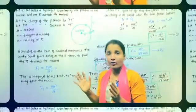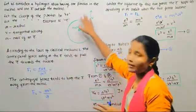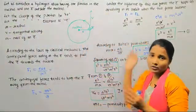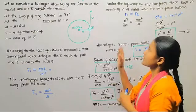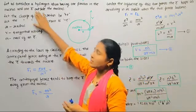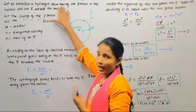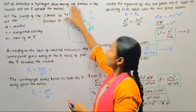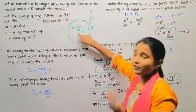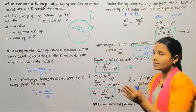Dear students, I am going to derive one equation — that is the derivation of an expression for the radius of orbit present in the hydrogen atom. Here first you have to consider the hydrogen atom. It is having one proton inside the nucleus and one electron outside the nucleus.